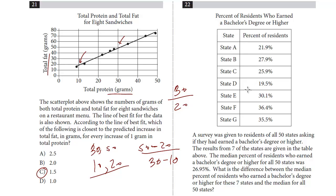Question 22. We have a survey, percent of residents who earned a bachelor's degree or higher. And we've got seven states and the percent of residents. A survey was given to residents of all 50 states asking if they've earned a bachelor's degree or higher. The results from seven of the states are given on the table. The median percent of residents who earned a bachelor's degree or higher for all 50 states was 26.95%. What is the difference between the median percent of residents who earned a bachelor's degree or higher for these seven states and the median for all?